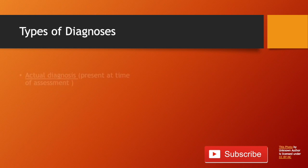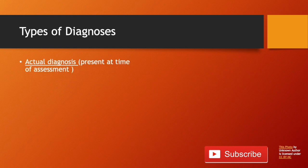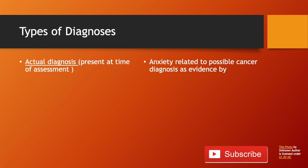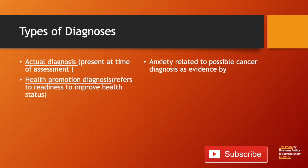There are different types of diagnoses. The first is an actual diagnosis, which is present at the time of assessment. An example is anxiety related to possible cancer diagnosis, as evidenced by signs and symptoms — this can include a direct quote from your patient or behaviors they display. Next is a health promotion diagnosis, which refers to a readiness to improve health status. An example is readiness for enhanced nutrition, and it usually includes the word 'readiness.'